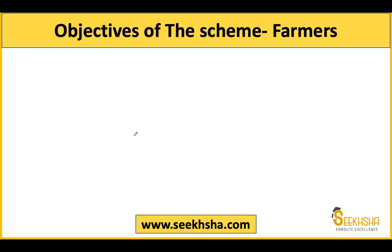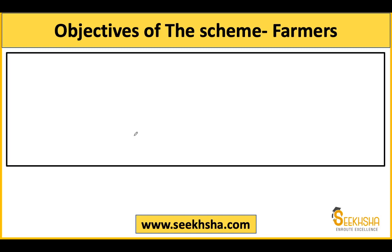Investment in agriculture has not even grown at a 2% rate — that is a major problem. Now, what are the objectives of this scheme? The objectives will differ from different points of view: the farmer's point of view, the consumer's point of view, the government's point of view, and the agricultural entrepreneur's point of view.